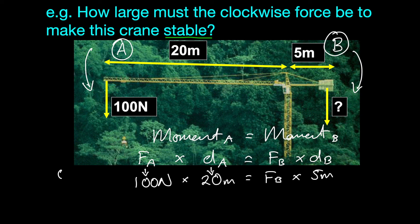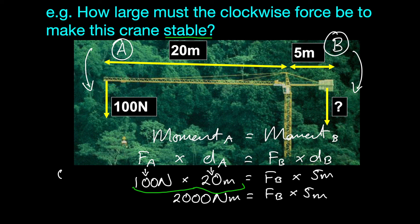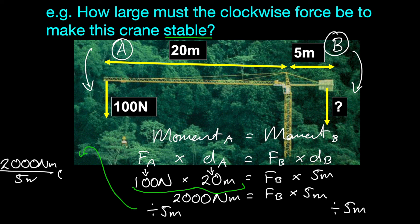Let's go about solving and simplifying this. 100 times 20 is equal to 2000 newton meters, which is equal to the force of B times 5 meters. To solve this I'll divide by 5 meters on both sides. So 2000 newton meters divided by 5 meters is equal to FB, the force of B. We can put that into our calculator — 2000 divided by 5 — which is equal to 400 newtons. And that's our answer.